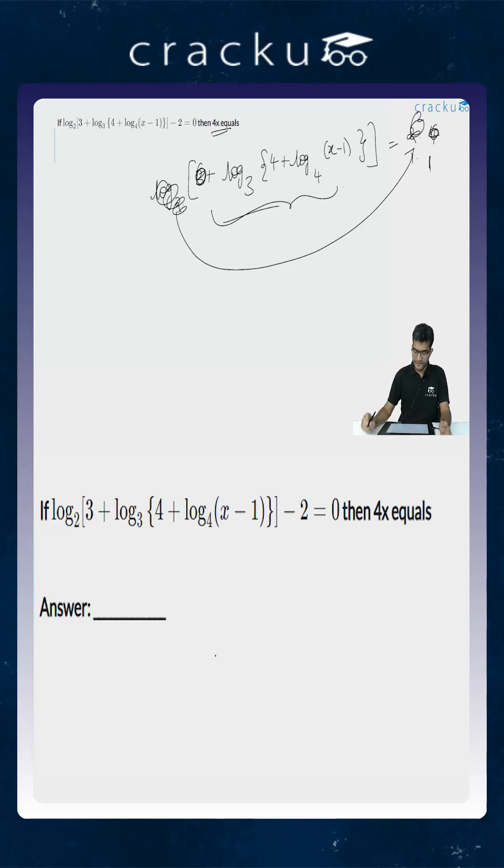So log of 4 plus log of x minus 1, the first base is 4 over here, and the second base is 3, is equal to 1. If you are now removing this logarithm, and if you are transferring 3 to the other side, the right hand side becomes equal to 3 to the power 1, which is equal to 3.